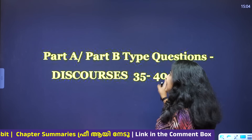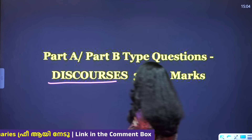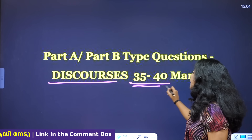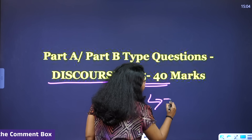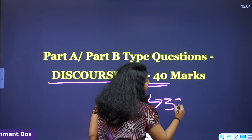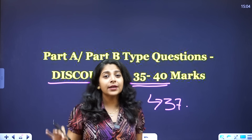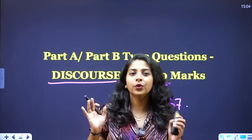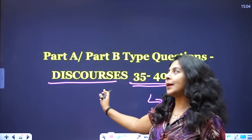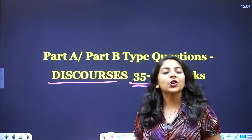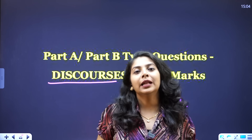We are going to discuss the next question. This is the 40th time of discourse. This is the correct question. I am going to say it is the 30th time, this is 35 to 40. I am going to say that it is 37 marks. This is 3 marks — the number of discourse. Discourses: Part A and Part B.